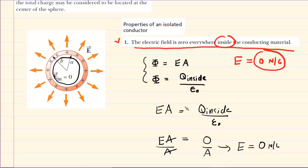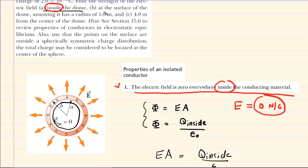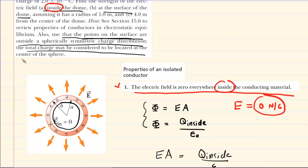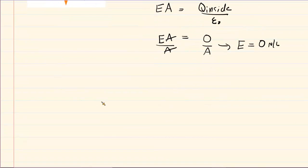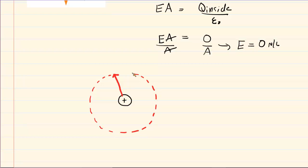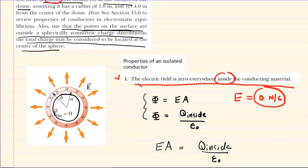Either way, the answer to part A is zero. In part B, we're asked for the electric field at the surface of the dome. The hint says that points on the surface are outside a spherically symmetric charge distribution, and the total charge may be considered to be located at the center of the sphere. Essentially, all of the charge on the dome can be imagined as concentrated at a single central point. Our job is to find the electric field produced by that accumulated positive charge at the surface, meaning the distance is simply the radius of the dome, which is 1 meter.